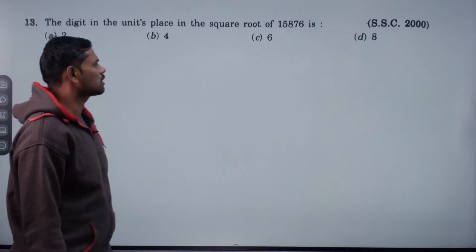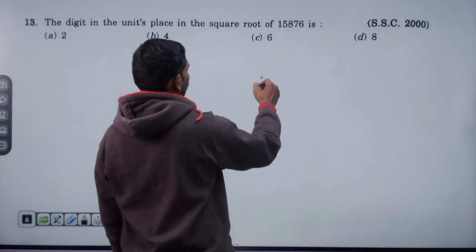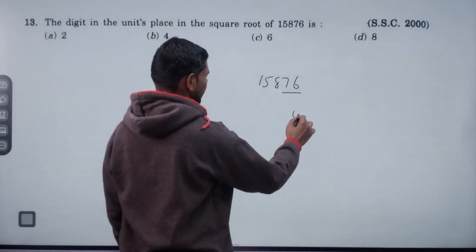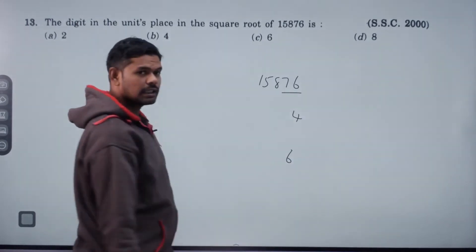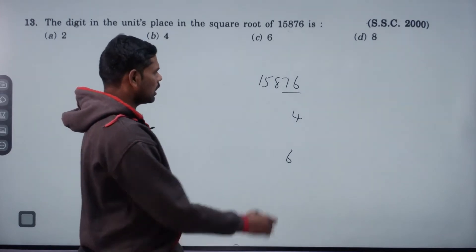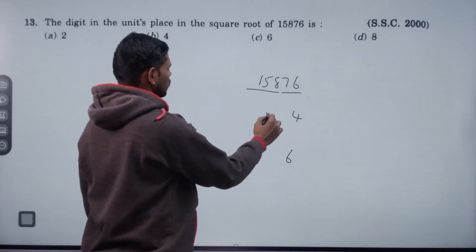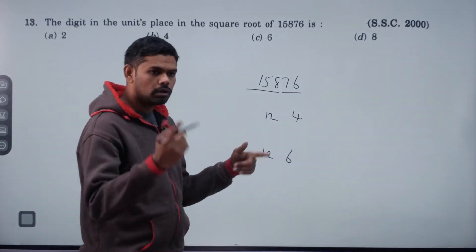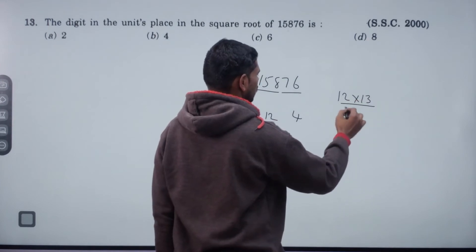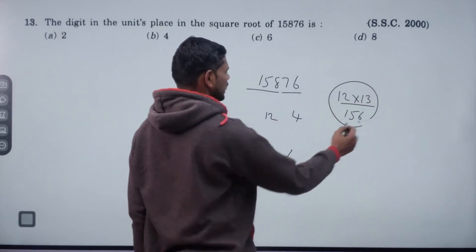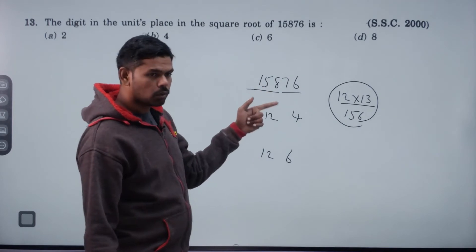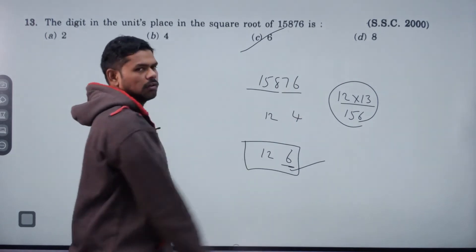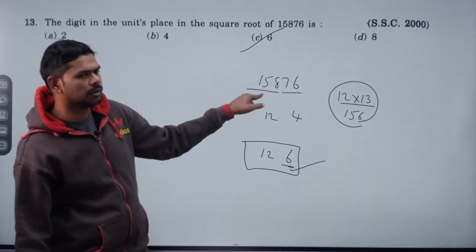The digit in the units place in the square root of 15876. Units place digit is 6, so the square root ends in either 4 or 6. 6 into 13 value is 156. Answer is 126. Units place: value 156. Answer 124.